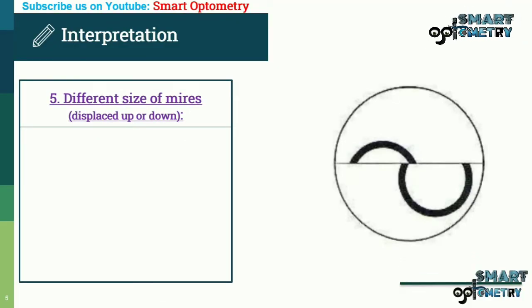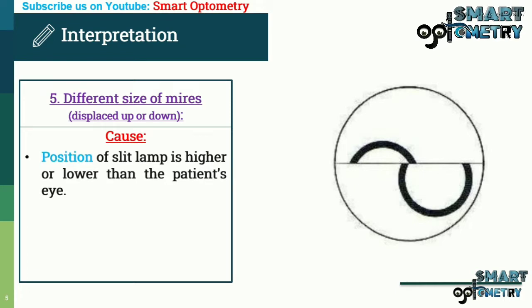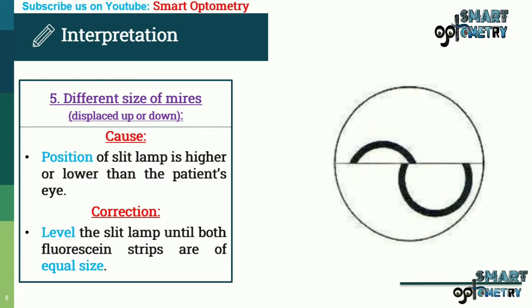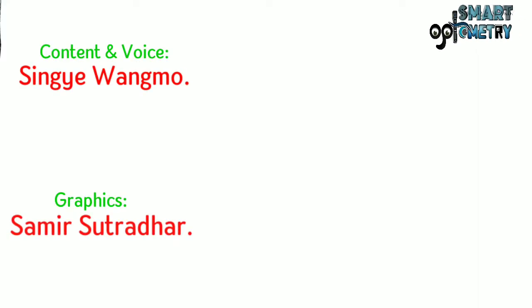Different size of mires displaced up or down. This is because the position of the slit lamp is higher or lower than the patient's eye. The correction is to level the slit lamp until both fluorescent strips are of equal size.